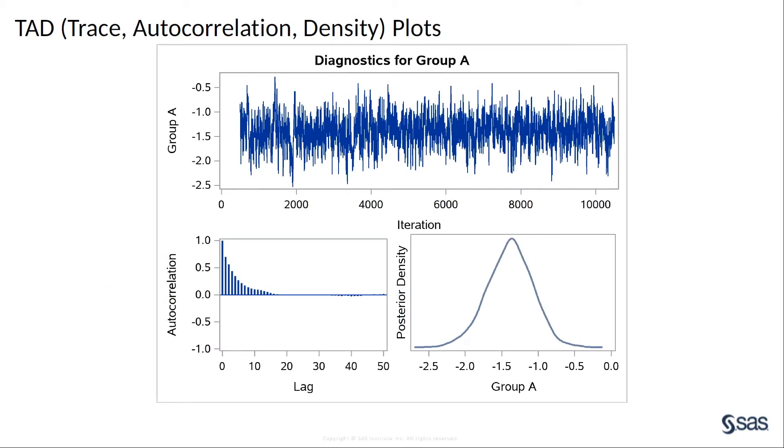PROC BGLIM produces several graphs to aid convergence diagnostics checks. TAD plots is short for trace autocorrelation density plots. You want to check whether the Markov chain has stabilized and has good mixing.